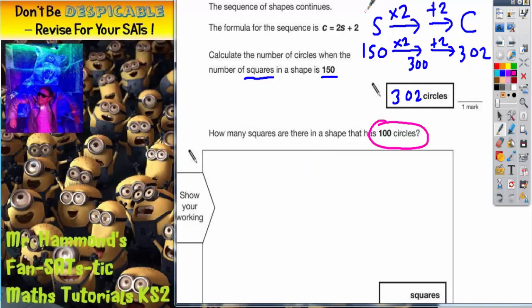And this is where this formula is going to help us. So what we're going to do now is we're going to rewrite that formula out. So we've got the number of squares times two, add two, equals the number of circles.